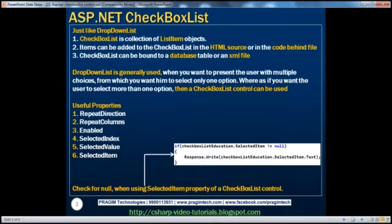Just like a drop-down list, a checkbox list is also a collection of list item objects. Items can be added to the checkbox list in the HTML source at design time or in the code-behind file programmatically. Checkbox list can be bound to a database table or an XML file. Drop-down list is generally used when you want the user to select only one option, whereas if you want the user to select more than one option, a checkbox list control can be used.